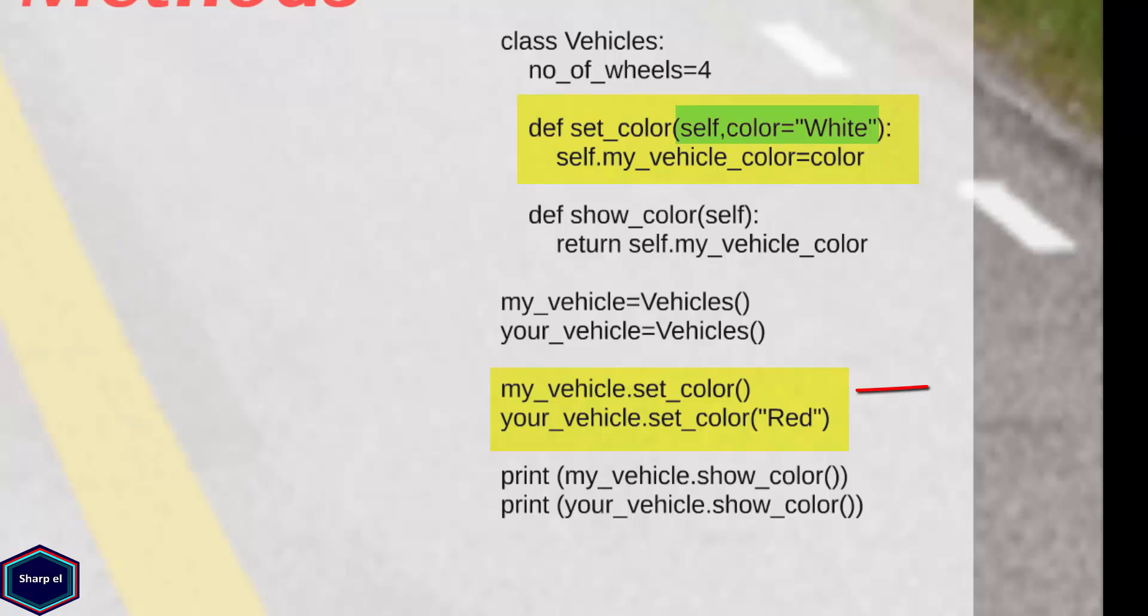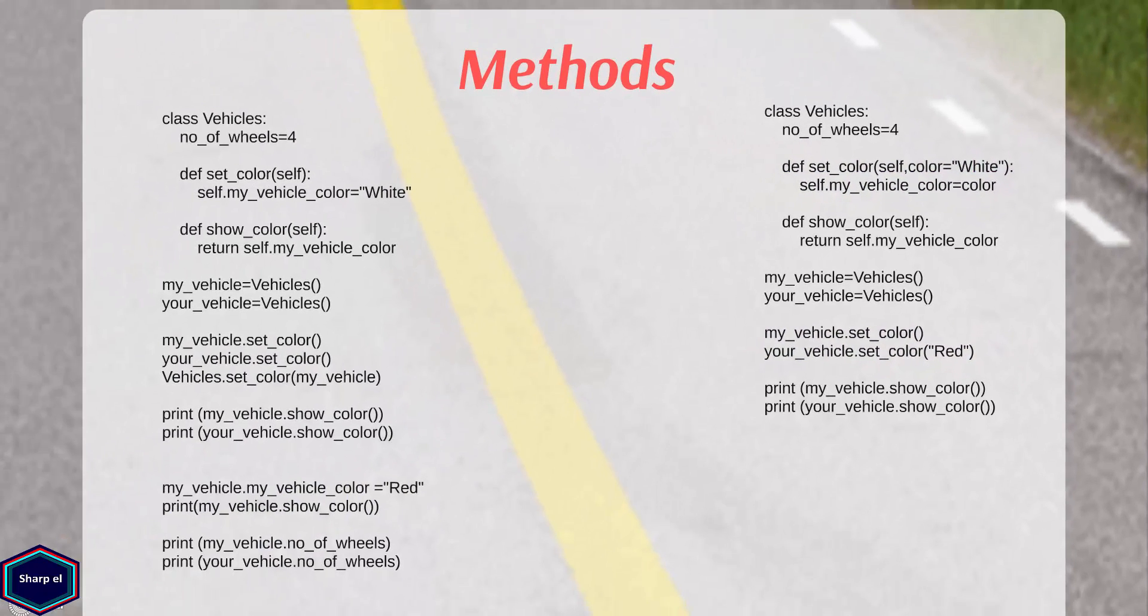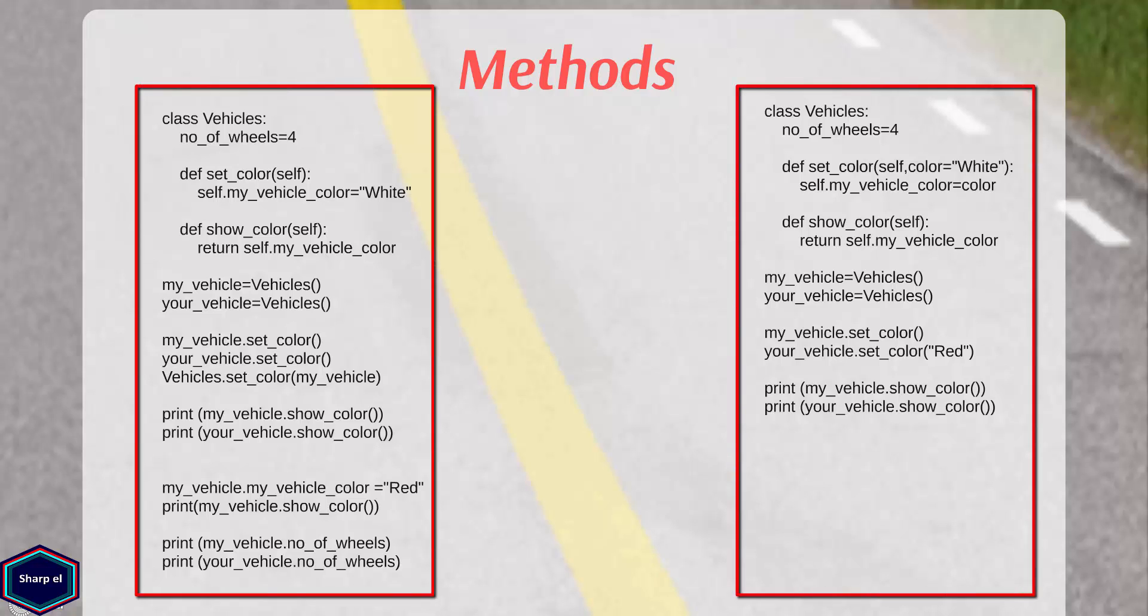If I call setColor method without any argument, then the myVehicleColor attribute is set to white. In a nutshell, both examples are very similar, but the second example is much more elegant if you are changing any class or instance attribute.